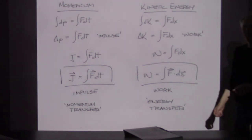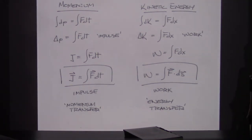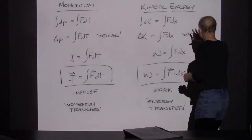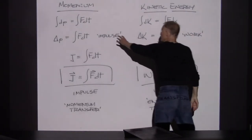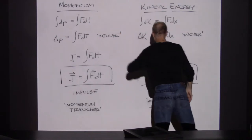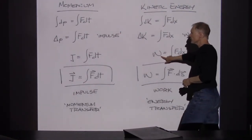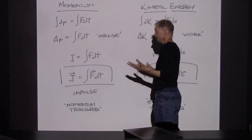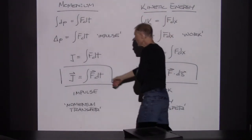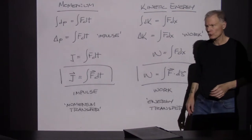So the same way that increases in kinetic energy come about as a result of forces integrated over displacements, increases in momentum can be calculated as forces integrated over time — and that's called impulse. This is called work. They're both momentum transfer and energy transfer respectively. The symbol for work is W, and the symbol for impulse is J.